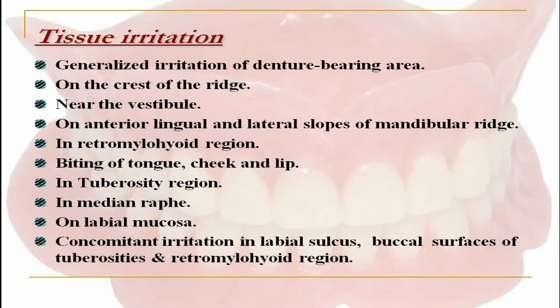The next major concern is tissue irritation. It can be generalized tissue irritation of the denture bearing area, or on the crest of the ridge, near the vestibule, on anterior lingual and lateral slopes of the mandibular ridge, in the retromylohyoid region, due to biting of tongue, cheek and lip, in tuberosity regions, or in the median palatal raphe area, or in the labial mucosa and concomitant irritation in the labial sulcus, buccal surfaces of the tuberosities, and retromylohyoid region.